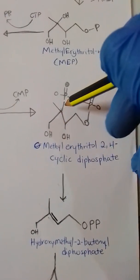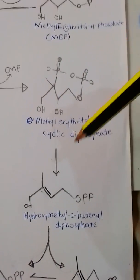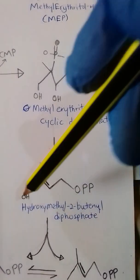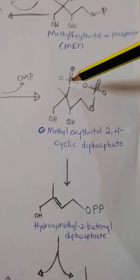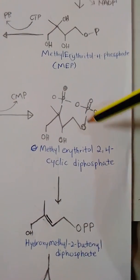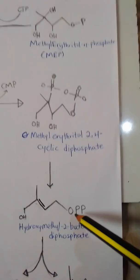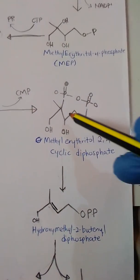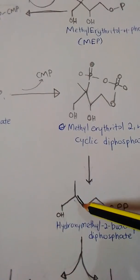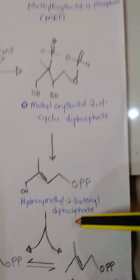The next intermediate formed is called hydroxymethylbutenyl diphosphate, or HMBPP. This compound is formed by the movement of the phosphate on the second carbon to join the terminal phosphate, forming a diphosphate at the end, followed by a dehydration reaction to initiate a double bond to form hydroxymethylbutenyl diphosphate.